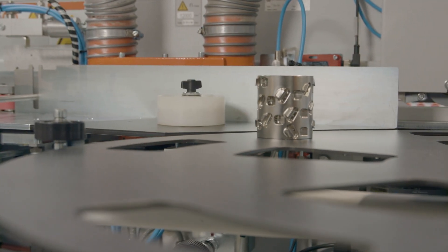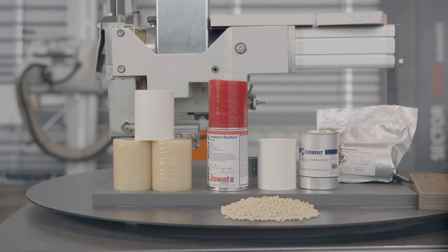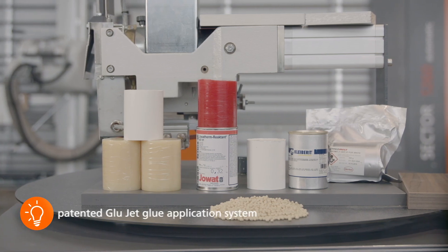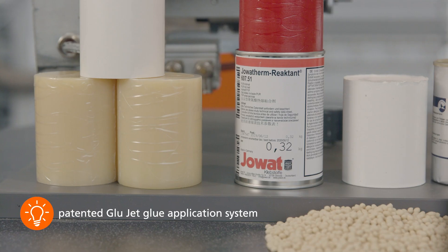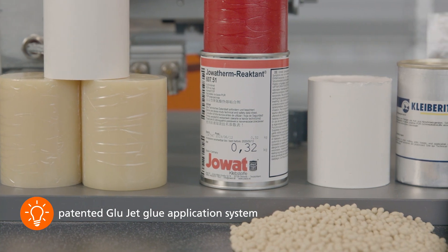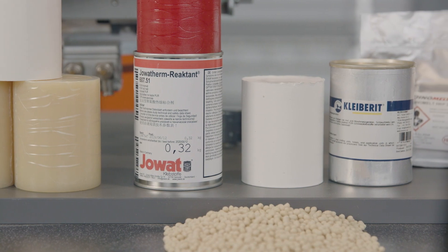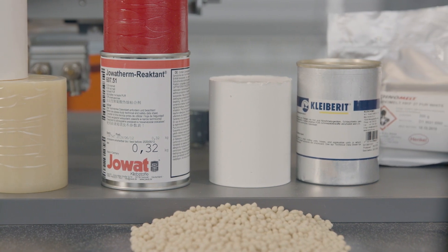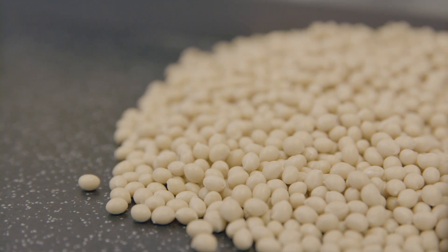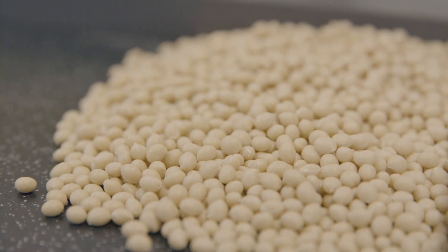The heart of the Auriga is, of course, our unique GlueJet adhesive application system. With GlueJet, you can process standard adhesive cartridges or granulated adhesive with EVA or waterproof polyurethane adhesives as required in an unrivaled quality with zero joint.